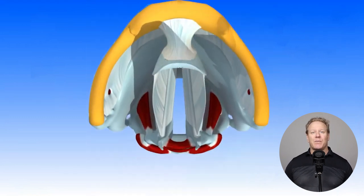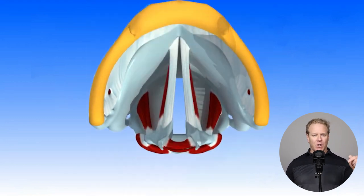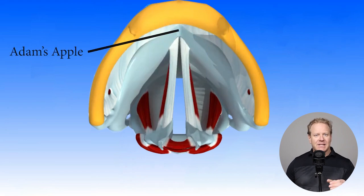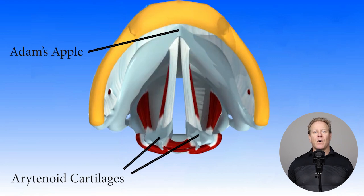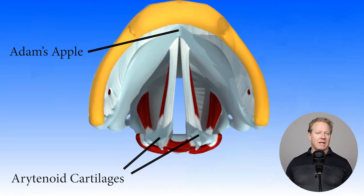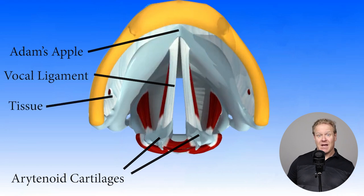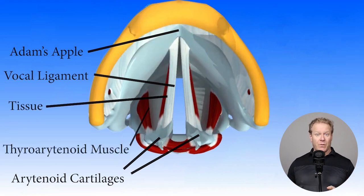Next, we will present a top-down view of the vocal cords. The vocal cords are inserted behind the Adam's apple and extend all the way back to the arytenoid cartilages. The vocal cords are composed of ligaments, layers of tissue, and muscle. The ligament is located right here, followed by layers of tissue, and then the thyroarytenoid muscle.